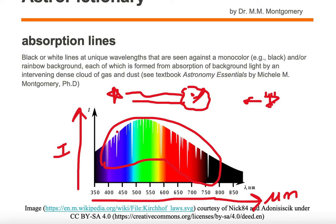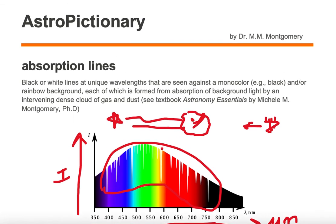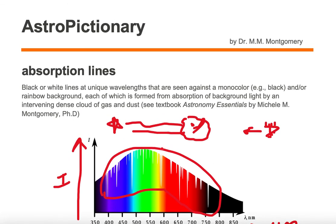Each one of these white lines is an absorption line, which is seen against a black background or a rainbow background.